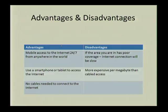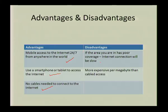The advantages of mobile access are that you can access the internet wherever you are in the world at any time, you can use your smartphone or tablet, and there are no cables involved. The disadvantages are poor coverage depending on your location and it is more expensive per megabyte than cabled access.